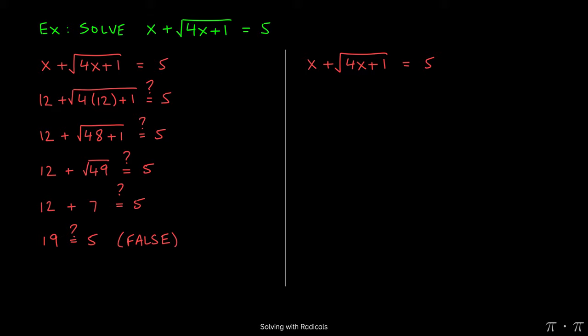Now at this stage, we recognize that 19 is not equal to 5, which means that plugging in 12 into the original equation results in a false statement. This means that 12 is not a solution to the original equation we were given.